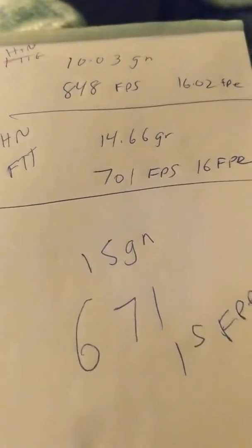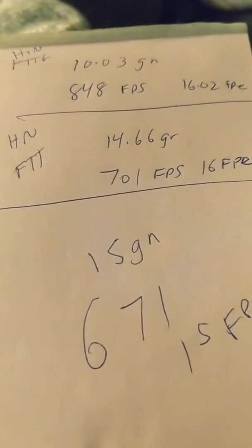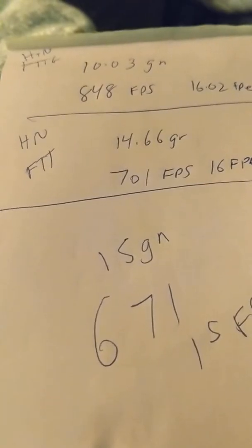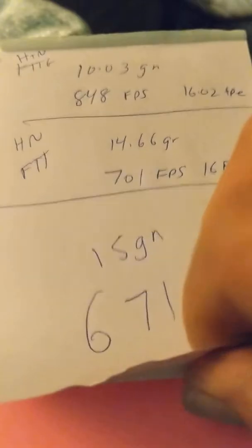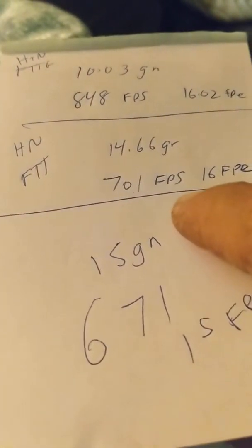The H&N Field Target Trophy Greens, that's the alloy pellets, 848 feet per second. H&N Field Target Trophies and also the H&N Field Target Trophy Power, 701 feet per second.